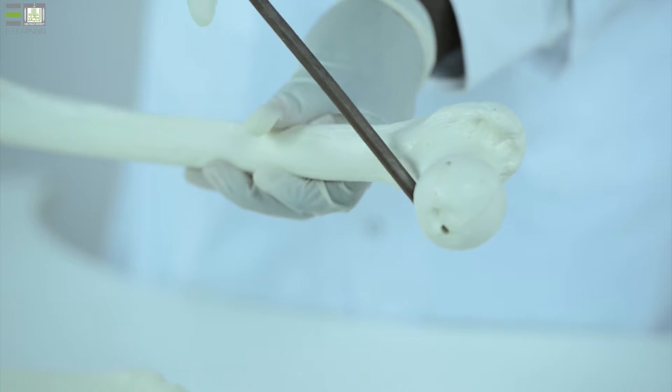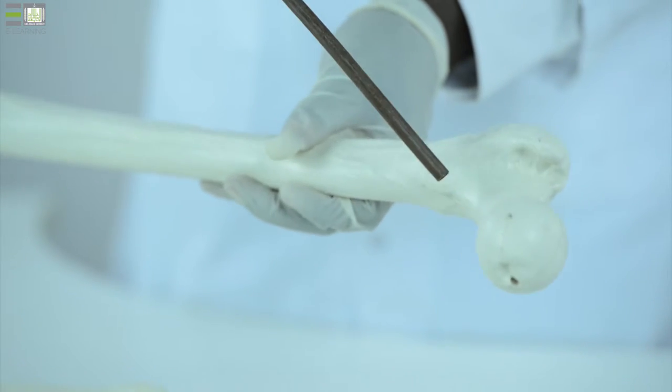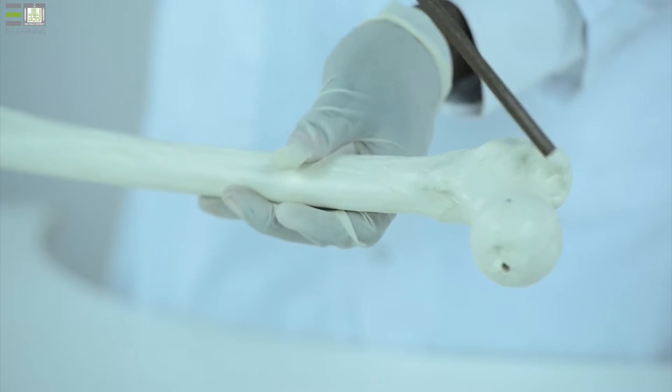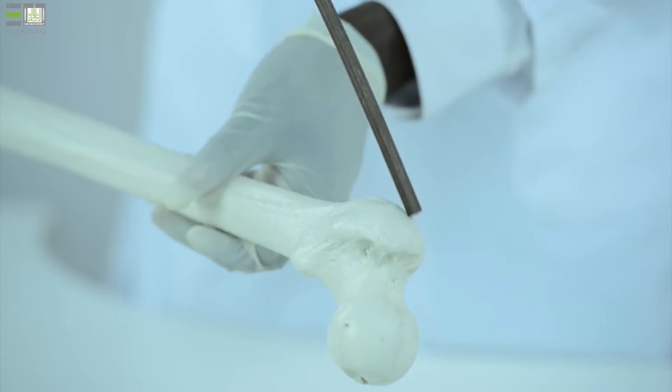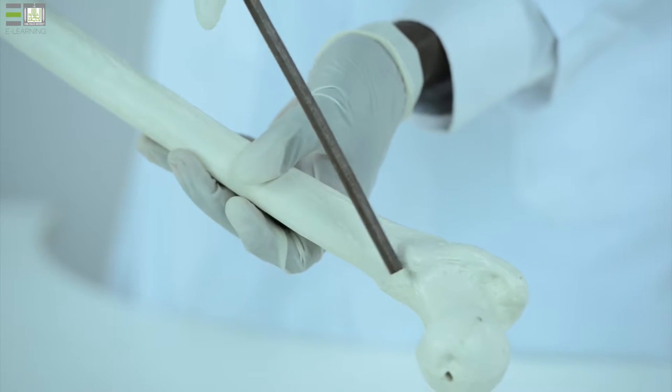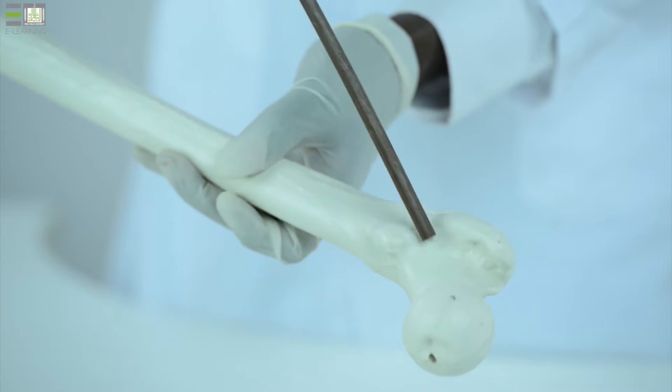The neck, which is the constricted part below the head, then two large, rough projections, the greater trochanter and the lesser trochanter, which give attachment for the muscles of the lower limb.